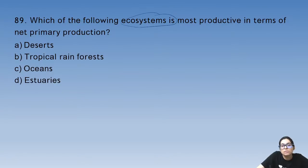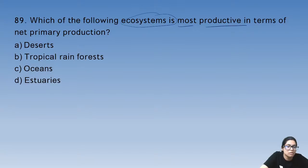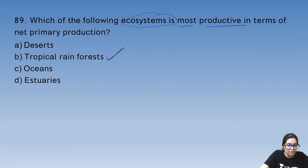Question 89: which ecosystem is most productive in terms of net primary production? It is the tropical rainforest — biodiversity is very high there, so productivity is also very high.